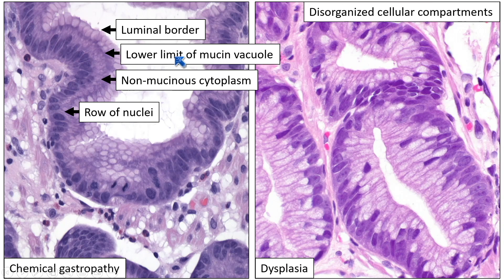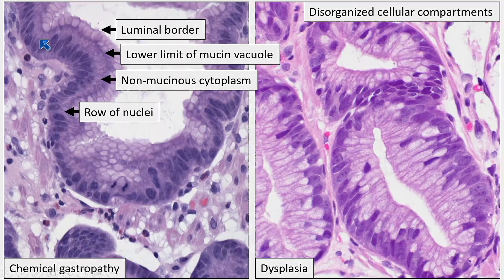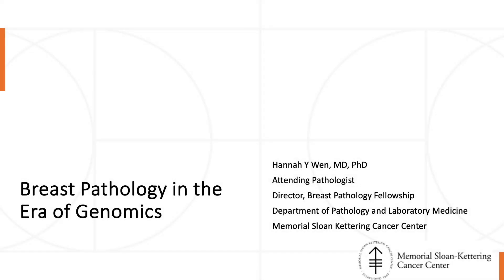My colleague Liz Montgomery published a paper talking about repair-type atypia in Barrett esophagus and in the gastric mucosa, describing what she calls the four lines of maturation in benign or non-neoplastic epithelium. It's a helpful thing to keep in mind when approaching repair-type changes in the stomach and in the distal esophagus.